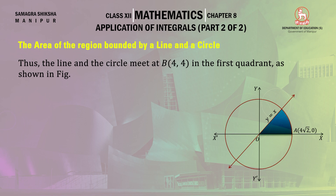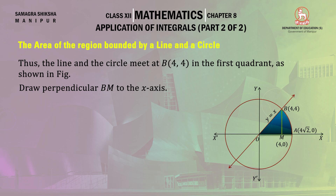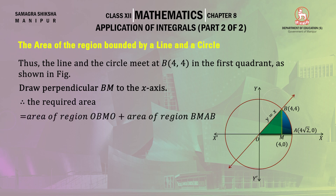From point B, drop a perpendicular BM to the x-axis. The total area of the required region is split into two parts: the green shaded region and the blue shaded region. Using vertical strips along the x-axis, the required area equals the area of the green region OBM plus the area of the blue region from BM to the arc of the circle.